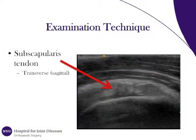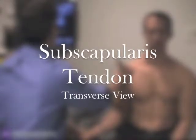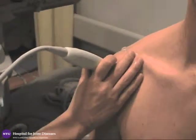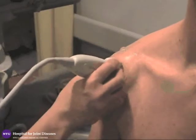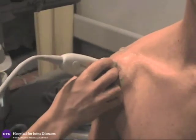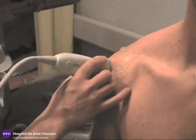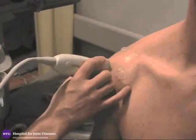The subscapularis tendon is also imaged in the transverse plane, as seen in the picture on the right demarcated by the red arrow. In order to image the subscapularis tendon in the transverse plane, the probe is simply rotated 90 degrees. This close-up video shows how the probe can easily be transitioned from one image plane to the other with a simple turn of the wrist. The probe can then be moved laterally and back medially in order to image the entire subscapularis tendon.